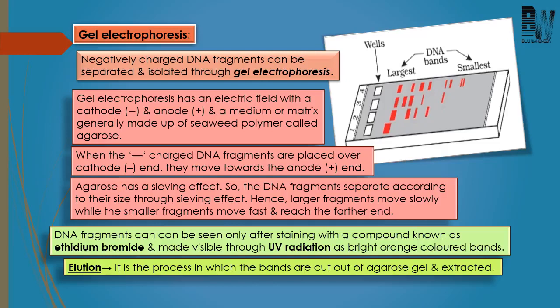If you want to visualize the DNA, staining is required. This staining is performed with a compound known as ethidium bromide. After staining, you still cannot visualize the DNA in normal light — it has to be visualized under UV radiation.